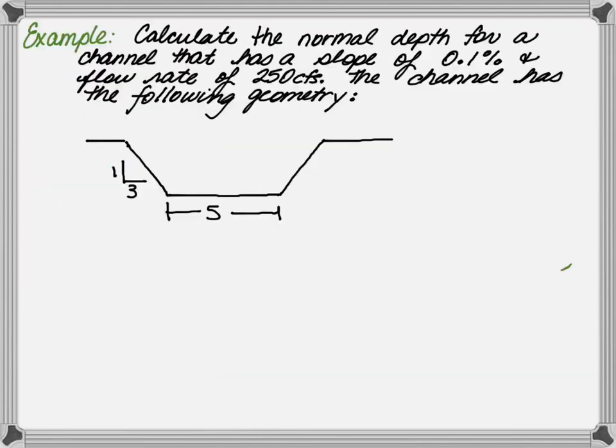This following example will help illustrate the point. Calculate the normal depth for a channel that has a slope of 0.1%, a Manning's roughness of 0.03, a flow rate of 250 CFS. The geometry of the cross-section is trapezoidal, with a width of 5 feet, and side slopes of 3 to 1.